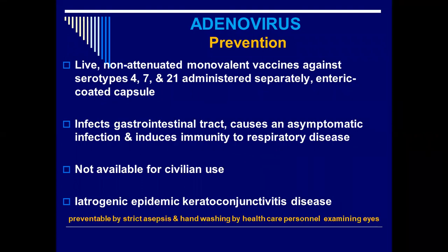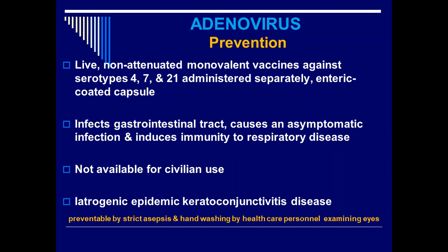This vaccine is serotype-specific — each serotype has its own effect. We cannot interchange serotypes. We have three monovalent non-attenuated live vaccines of adenoviruses: serotype 4, serotype 7, and serotype 21. They are administered separately because they cannot be used collectively — they will inactivate each other.